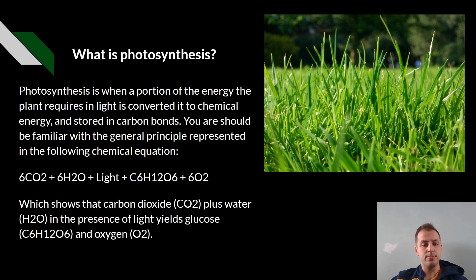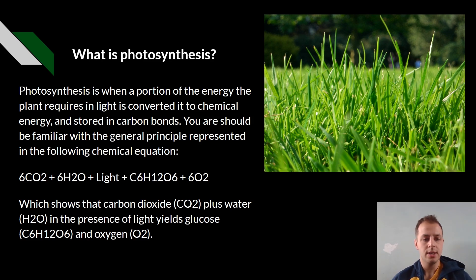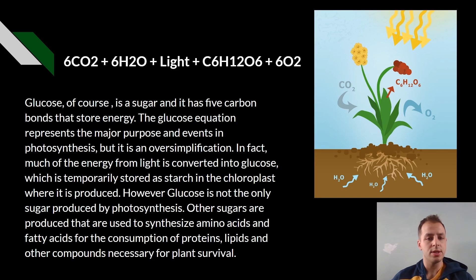You're probably familiar with the general principle represented in the following chemical equation. We have six carbon dioxide, six hydrogen and two oxygen plus light, which then makes glucose and oxygen. Glucose is a sugar that has five carbon bonds that store energy.